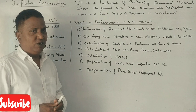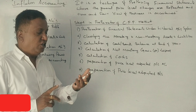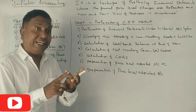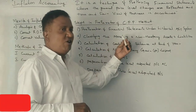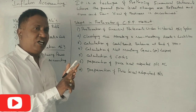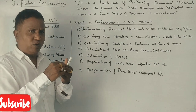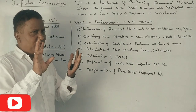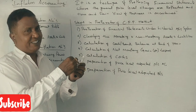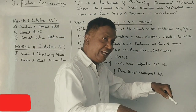Monetary assets are: cash in hand, cash at bank, debtors, trade receivables, and prepaid expenses. Monetary liabilities are those with immediate benefit: for example, creditors, bills payable, bank overdraft, and outstanding expenses.